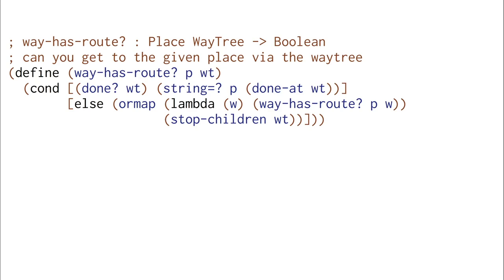We also looked at writing the way hasroot function, which determines if you can get to a particular place in a way tree. We simply go through all of the elements of the way tree. If we're at a done, we can only get to the place we're going if that done is at the correct place. Otherwise we use ormap to look over all the elements of the children and use way hasroot for each of them. This use of ormap parallels the use of mutual recursion in the data definition for way tree.